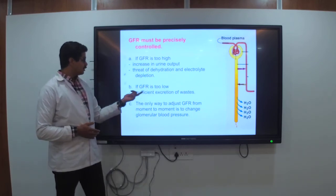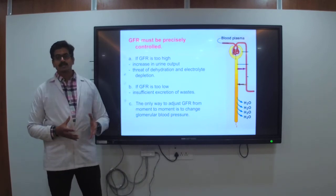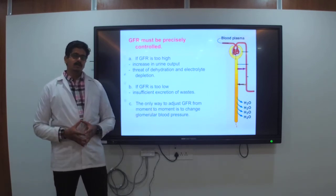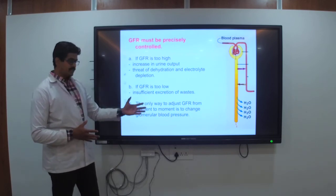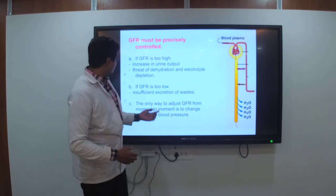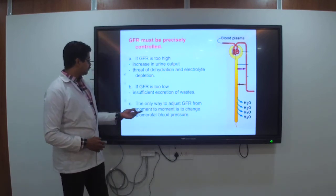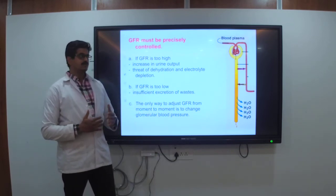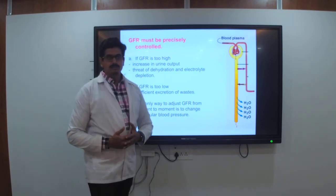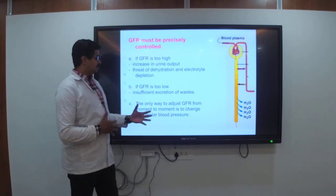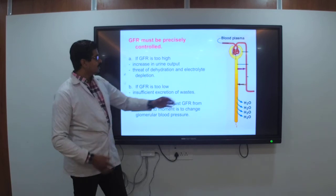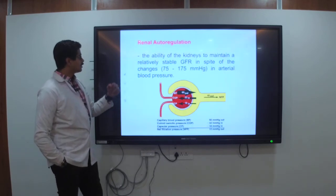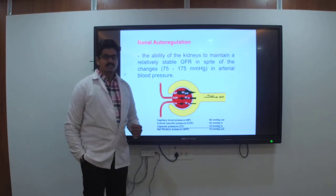If GFR decreases, output also decreases. The only way to adjust GFR from moment to moment is to change the volume of blood pressure. As pressure changes — varying from 60 mm Hg, with colloid osmotic pressure at 32 mm Hg and capsular pressure at 18 mm Hg — the net filtration pressure changes accordingly. This is about glomerular filtration. Regarding renal autoregulation, we will see that in the next class. Thank you.